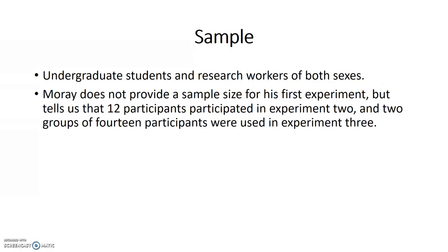Moray did not provide a sample size for the first experiment, but he did say that it consisted of undergraduate students and research workers of both sexes. In the second experiment, 12 participants took part, and two groups of 14 participants were used in experiment three.